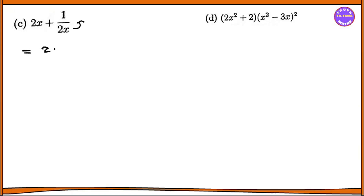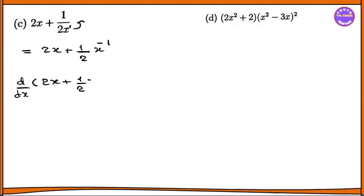We are going to do 2x plus 1.2. The x power 1, we are going to apply the power rule: x power minus 1 — that's what happens. Divide dx. So 2x plus 1.2x power minus 1. So 2x is equal to 2, plus 1.2. It is 1.2, so we are going to do this power 1.2.